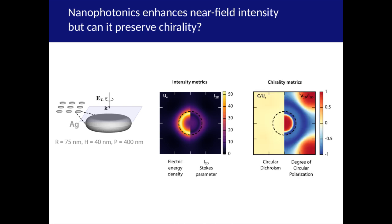But the chirality metrics show a very different picture. Circular dichroism vanishes everywhere in the unit cell. The degree of circular polarization is quite good, but changes sign. If our molecules or films extend over the unit cell, there will be cancellation of DOCP on spatial averaging. Thus, the silver disk is a poor system to enhance both metrics of chirality.